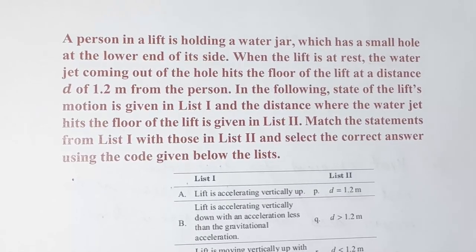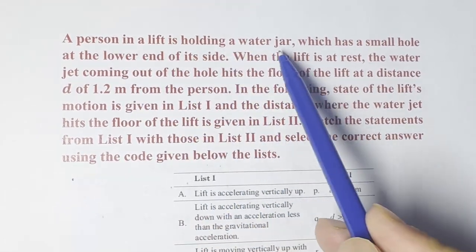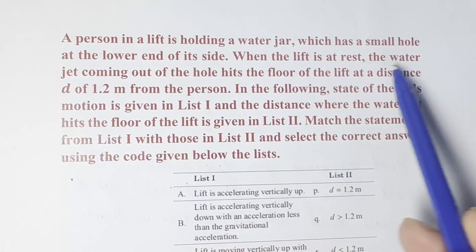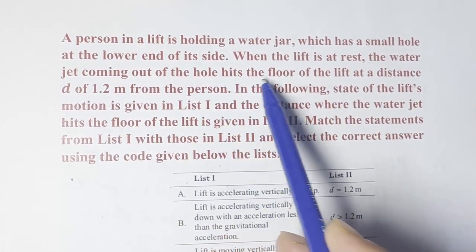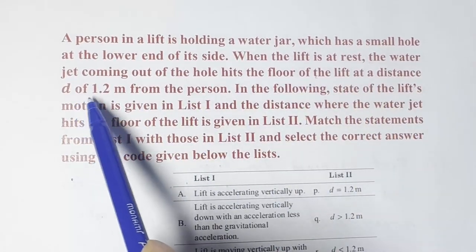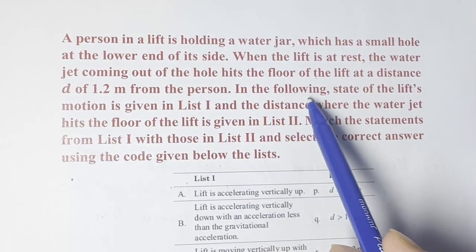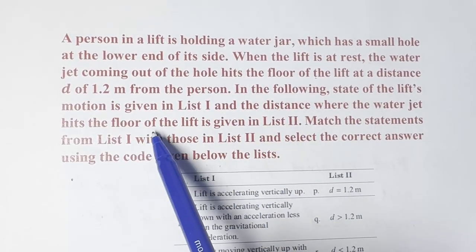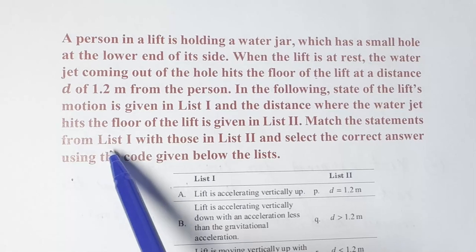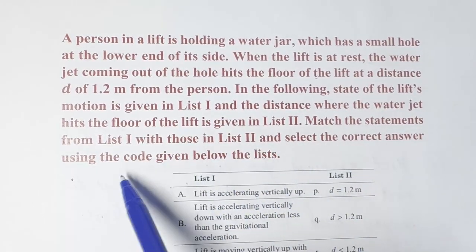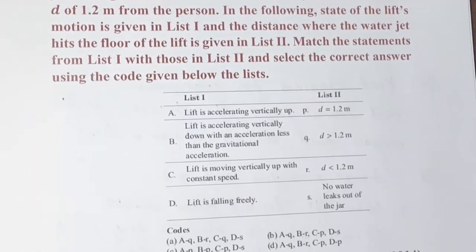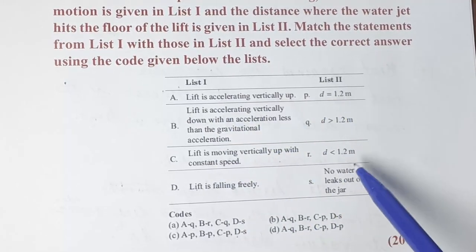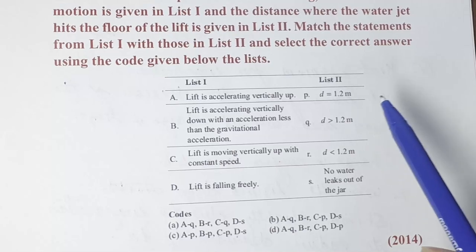Hello friends. In today's question, a person in a lift is holding a water jar which has a small hole at the lower end. When the lift is at rest, the water jet coming out of the hole hits the floor of the lift at a distance d of 1.2 meters. List one gives the state of motion of the lift, and list two gives the distance where the water hits the floor.